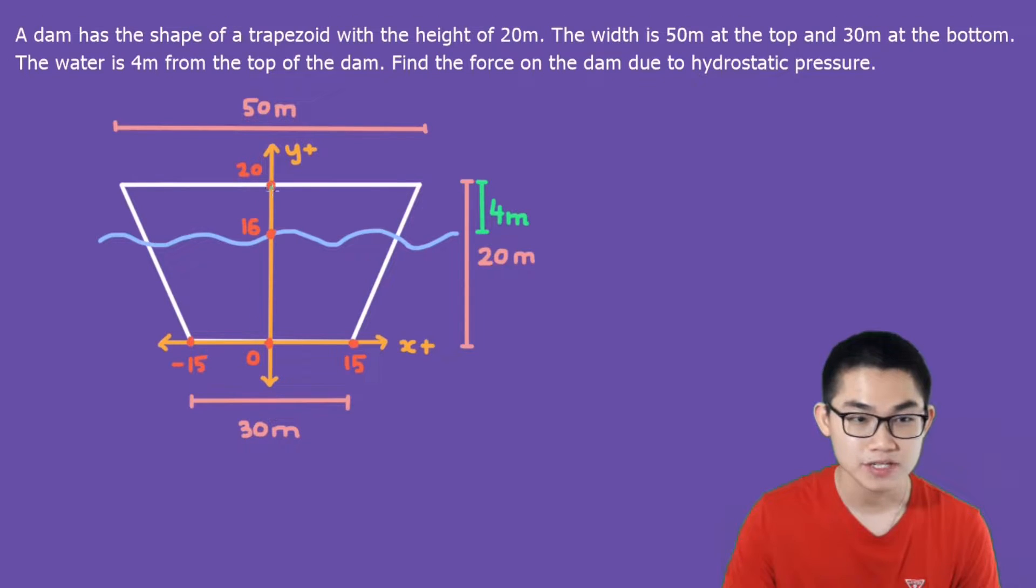The height is 20 meters. So you can see this is 0, this is 20. And because there's a distance of 4 meters from here, then we know that this value is 16.